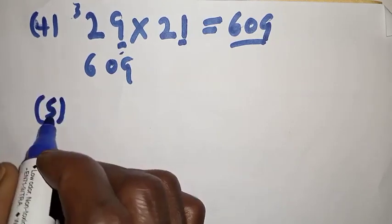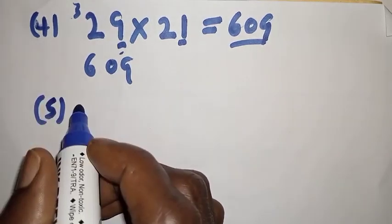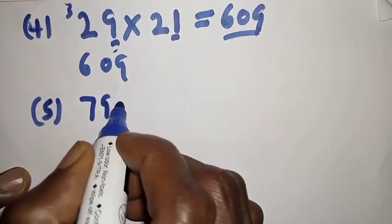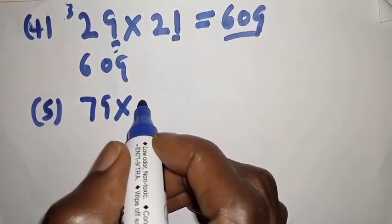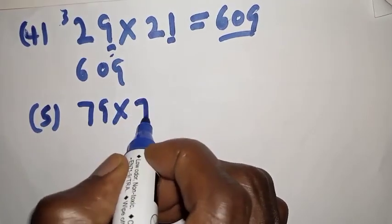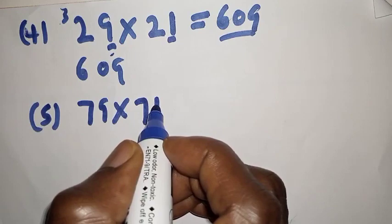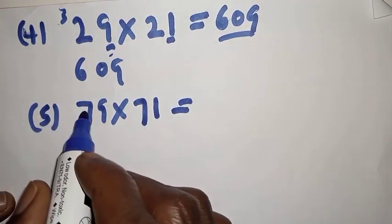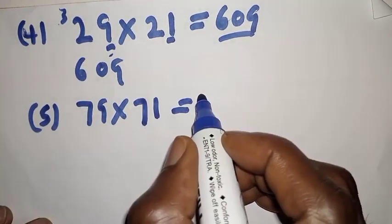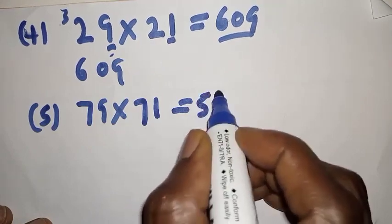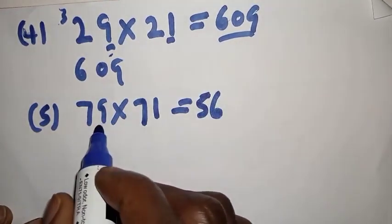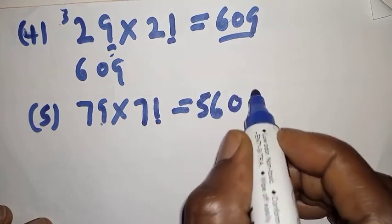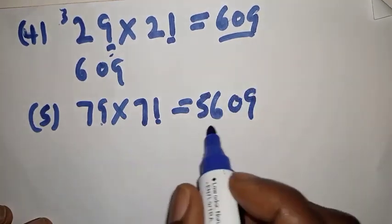Number five: 79×71. The tens digit is 7, the next digit after 7 is 8, so 7×8=56. Then the units digits: 9×1=9, written as 09. Therefore 79×71=5609.